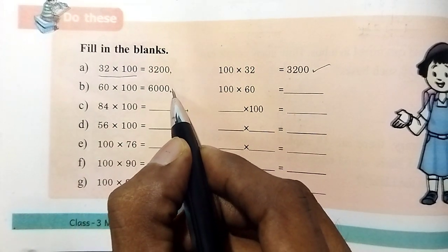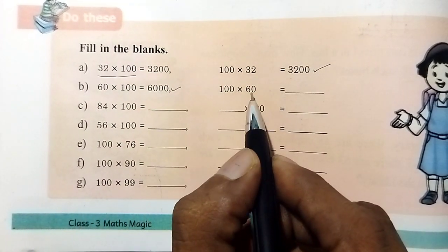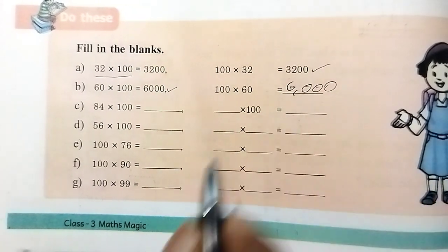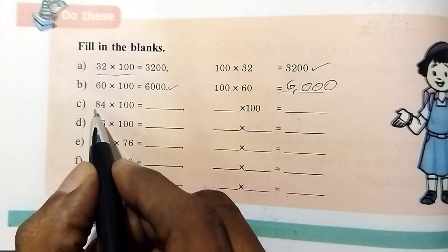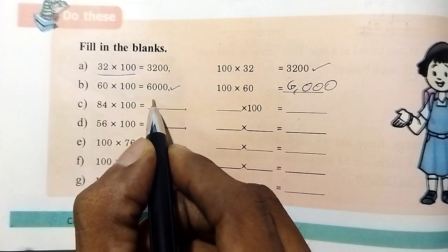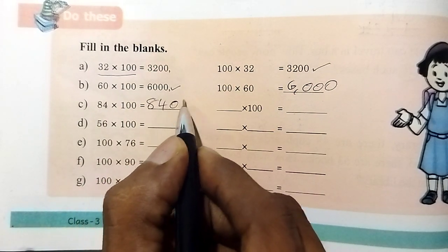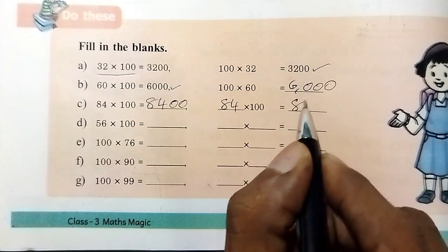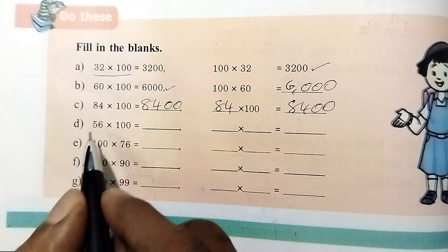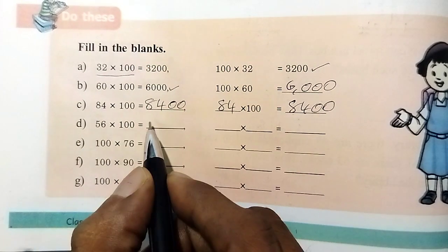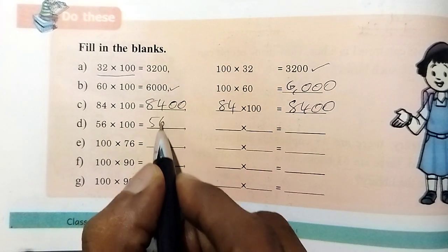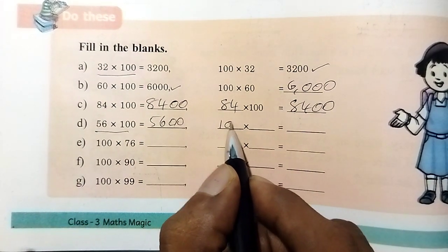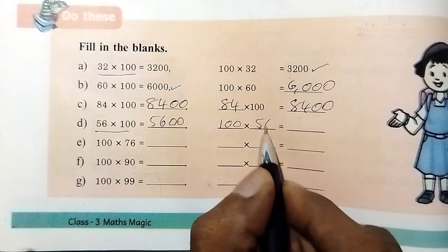14 to 100 is equal to 6,000. 14 to 60 can be equal to 6,000. 80 is equal to 60. This is 84 to 100, and 8,400s. 84 into 100 is 8,400. Cut to 56 into 100, and 5,600. Step: 100 into 56 is 100 into 56.